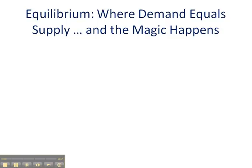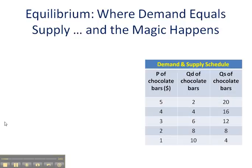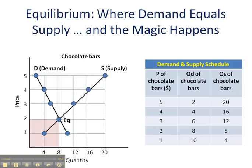Today we're focusing on simultaneous shifts in supply and demand. I've put up a combined supply and demand schedule here. We're talking about the price of chocolate bars, the quantity demanded of chocolate bars, and also the quantity supplied of chocolate bars. This is the graph of the supply schedule, and we see the intersection of supply and demand here.